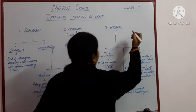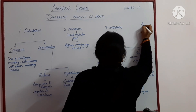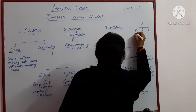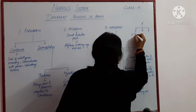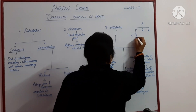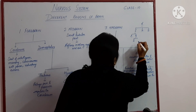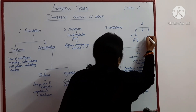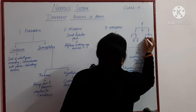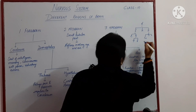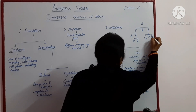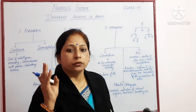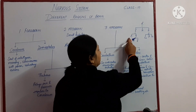Let's make a flow chart for quick revision. Regions of brain: forebrain, midbrain, and hindbrain. Forebrain is divided into cerebrum and diencephalon. Diencephalon is further divided into thalamus and hypothalamus. Midbrain has no further divisions. Hindbrain is divided into three regions: cerebellum, pons, and medulla oblongata.